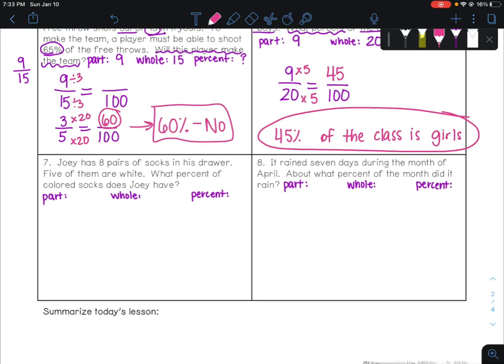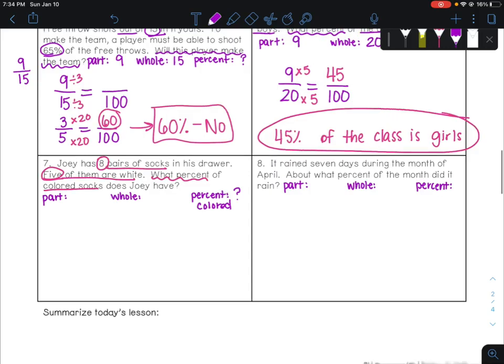For number 7, Joey has 8 pairs of socks in his drawer. 5 of them are white. What percent of colored socks does Joey have? So right away, I hear what percent, and we want to know what percent are in color. But if we look at our question, it's giving us that he has 8 pairs in the drawer. So 8 total pairs of socks, which would be the whole value, 8. But then the part says 5 of them are white. But it asks us about which ones are colored. So we should assume that if you take the 8 total and take away the 5 white ones, you're going to get 3 pairs that are different colors. So I'm going to say the part is actually 3 in this case. If you use 5, you would be getting the percent that are white. So you have to be very careful and make sure that you're labeling correctly and your labels are matching.